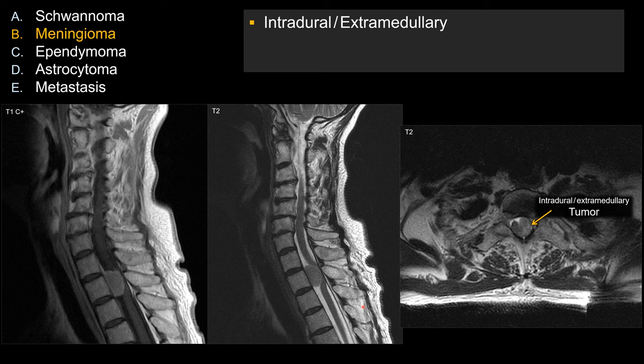For the differential diagnosis of an intradural extramedullary neoplasm, the top two are going to be meningioma versus nerve sheath tumor — either schwannoma or neurofibroma. What makes meningioma a better choice in this case compared to, say, schwannoma?